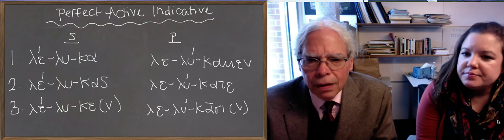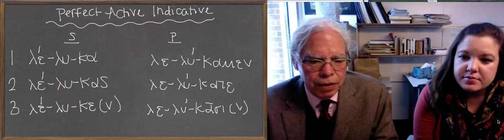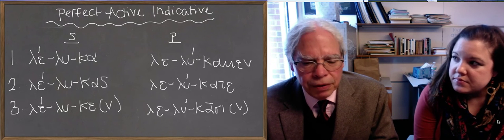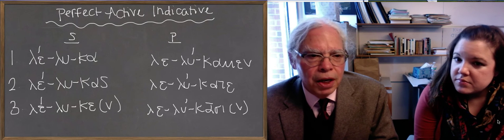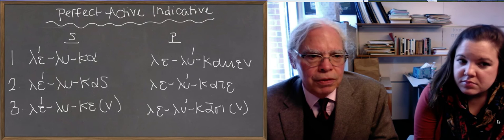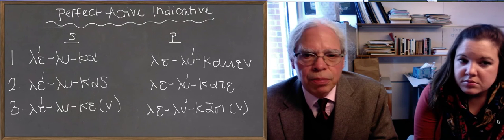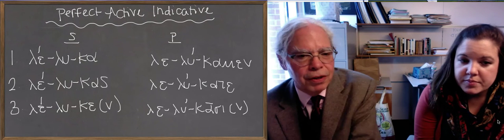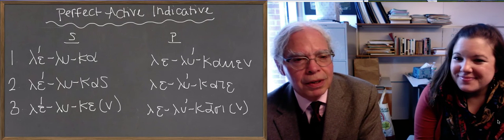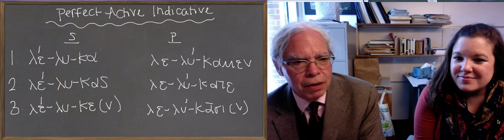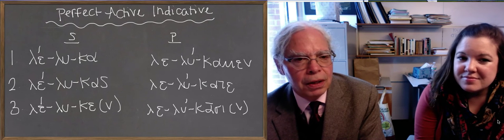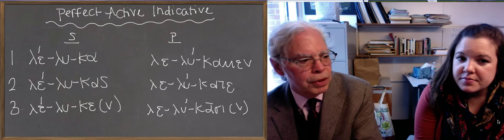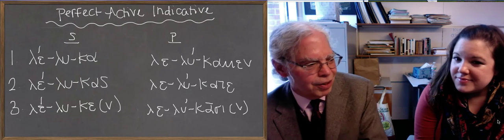The way you form these verbs is you have a menu of choices and different Greek verbs do different things. But the living, breathing perfect is the one that these exemplify in which you do reduplication. In other words, if you have a stem λύω of λυ, you take the initial consonant and you put an epsilon after it. So that gives you λελυ. We talked about that as a kind of regularization of the sound phenomenon of stuttering. That's really what it is, λελυ.